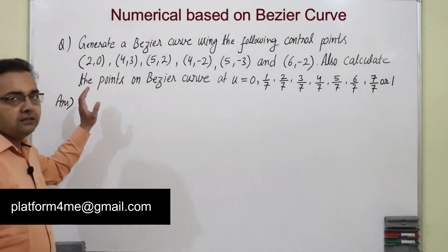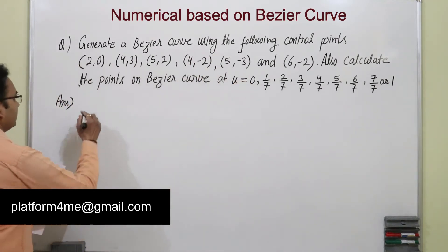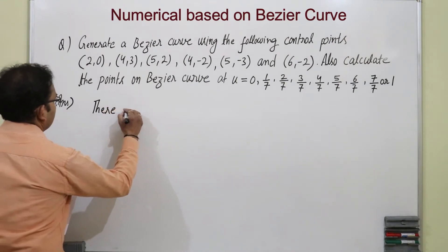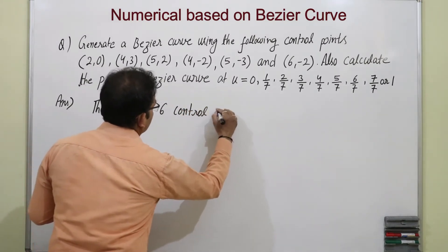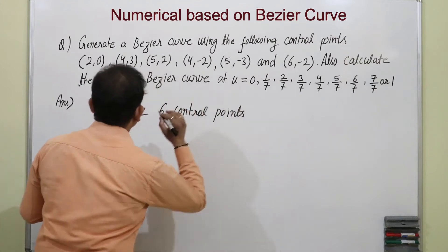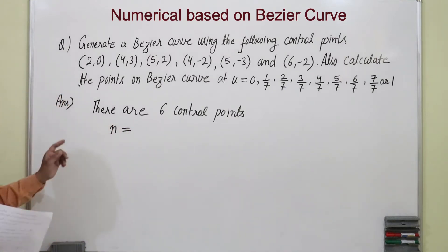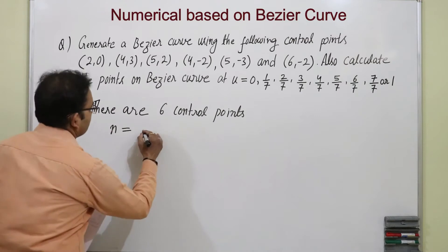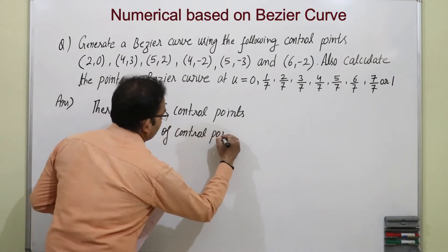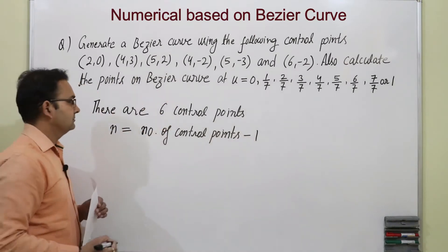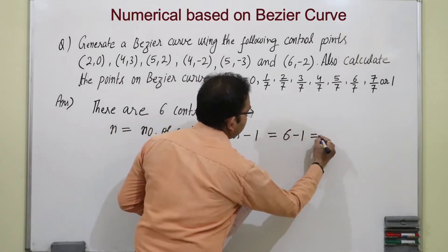We can see in this numerical there are 6 control points: 1, 2, 3, 4, 5, 6. So the value of n — n is the degree of the polynomial — equals number of control points minus 1. Number of control points is 6, so 6 minus 1 equals 5.